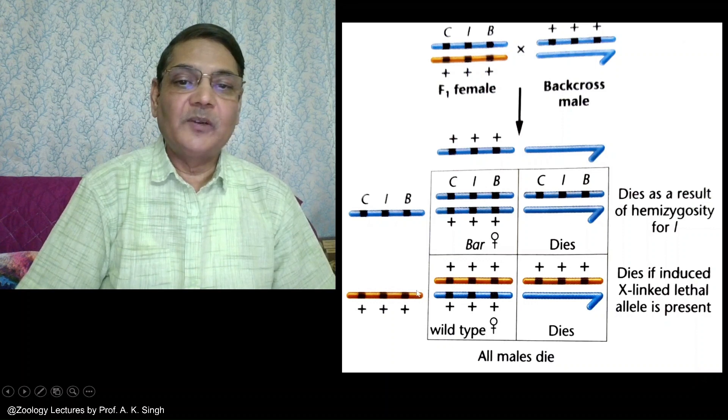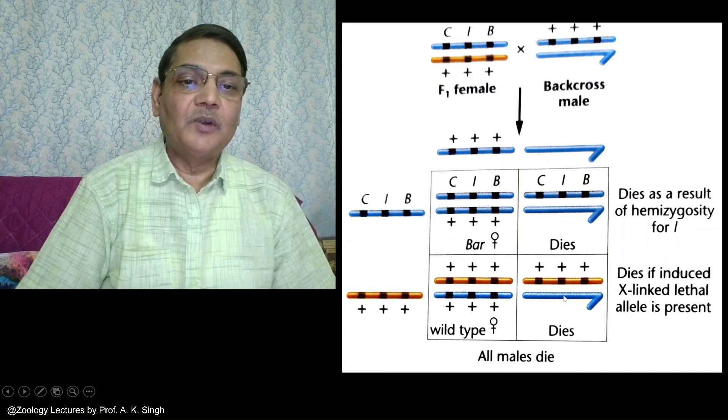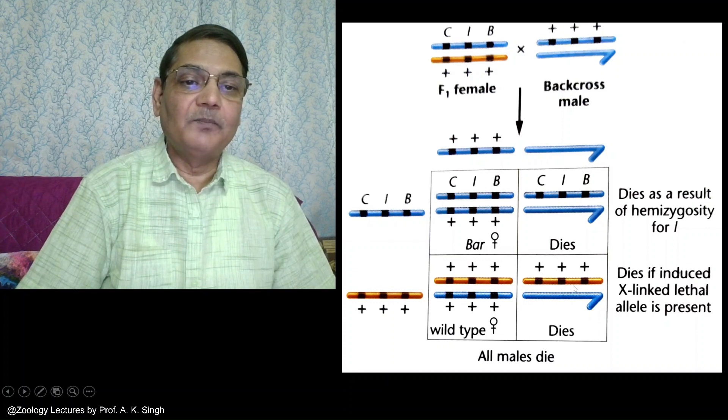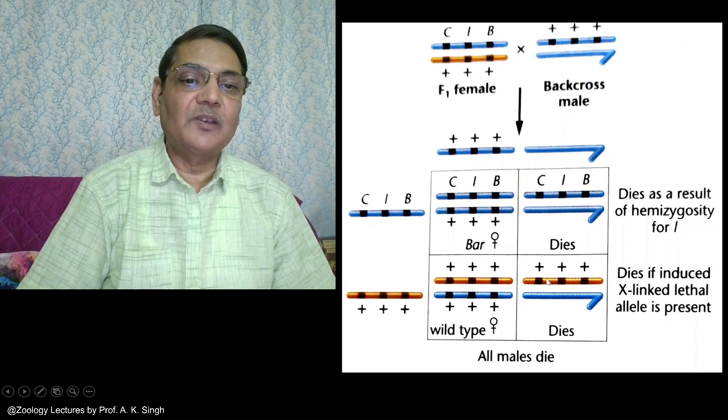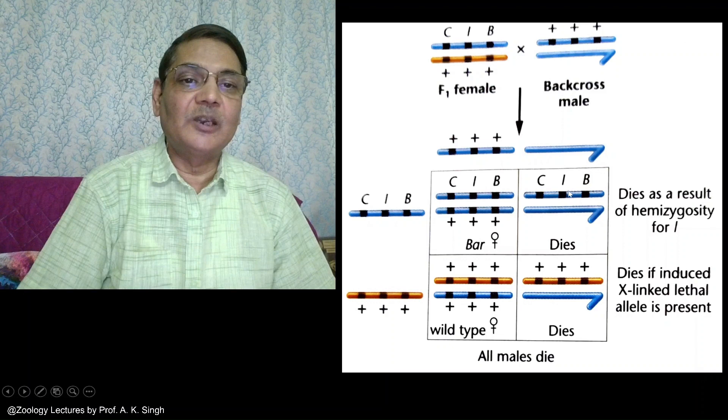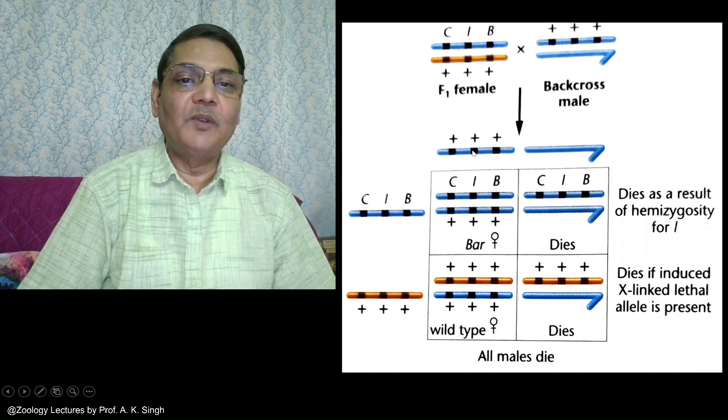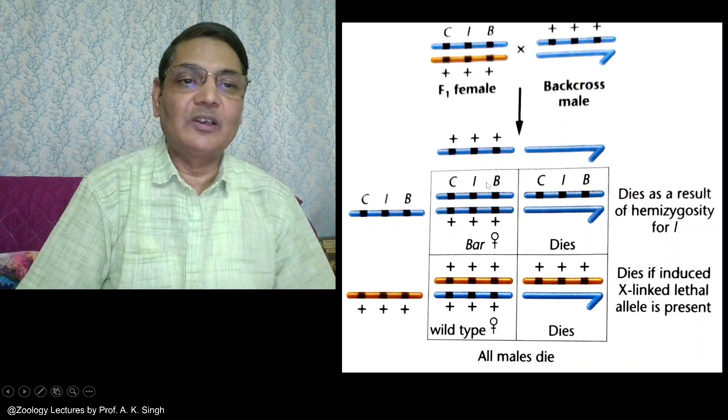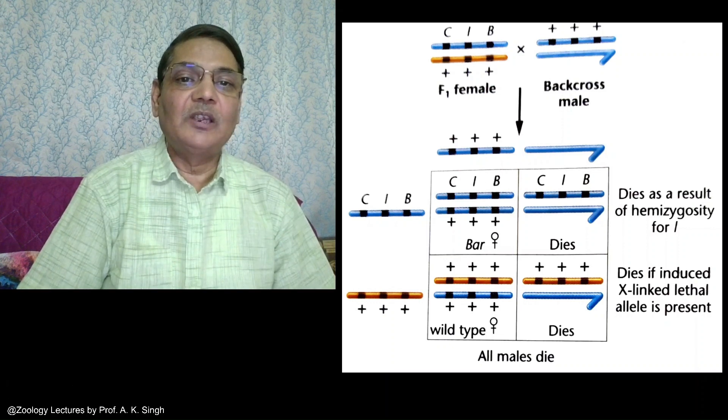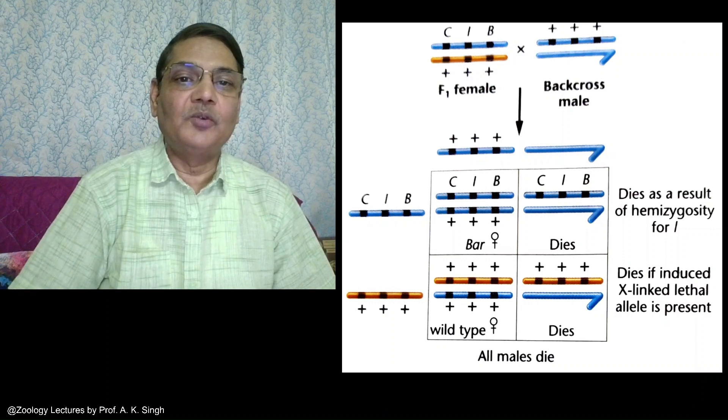Other males who have received the X chromosome from the female that came from the X-ray exposed male—if this male dies, then you can say that definitely this X chromosome carries a lethal mutation which was caused because of X-ray exposure. In such crosses, if males are not found at all, if only females appear in the F2 generation, then you can say with complete certainty that X-rays have created mutation in the X chromosome of the male individual.